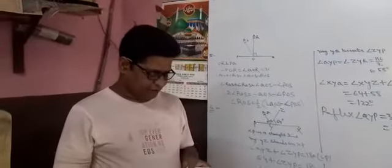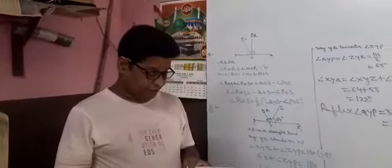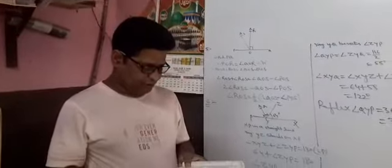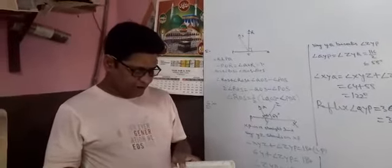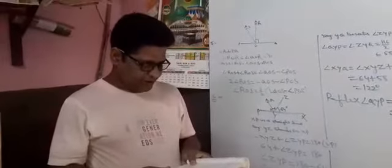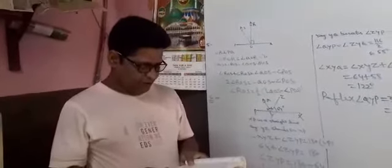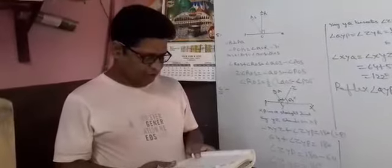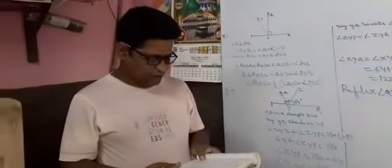In figure 6.17, POQ is a line. Ray OR is perpendicular to line PQ. OS is another ray lying between rays OP and OR. Prove that angle ROS is equal to one half of angle QOS minus angle POS.